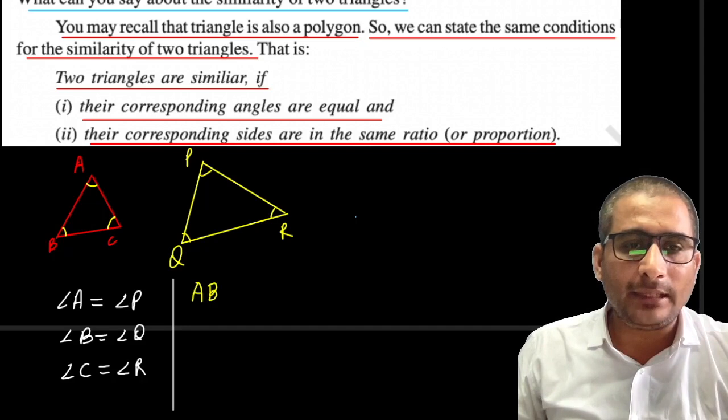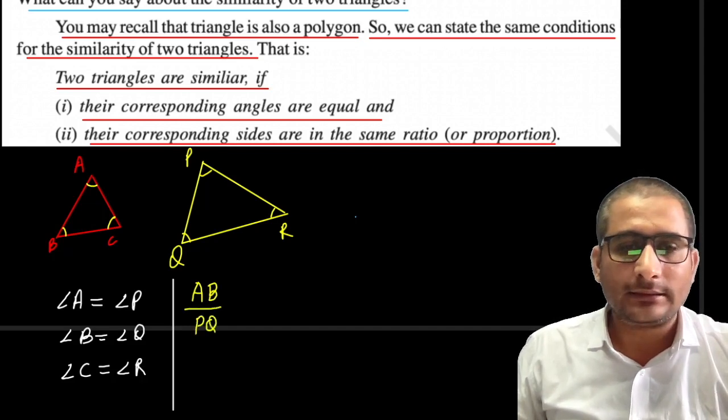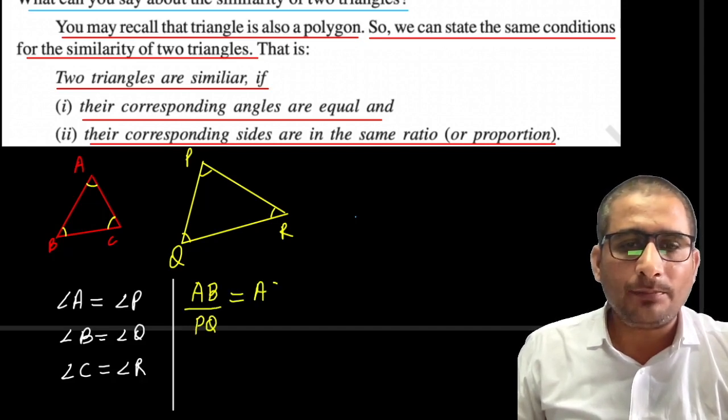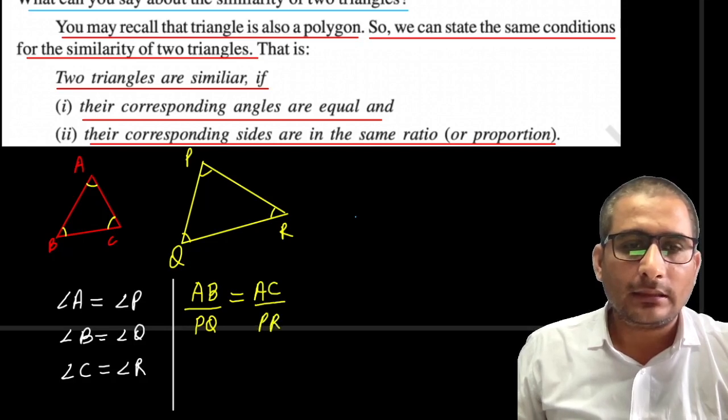The sides ratio: AB ratio to PQ, AC ratio to PR, and BC ratio to QR.